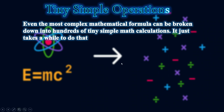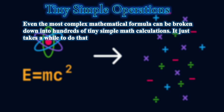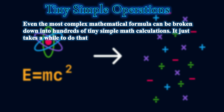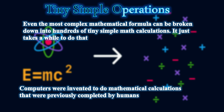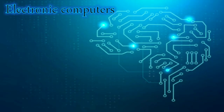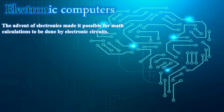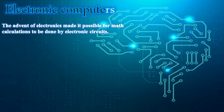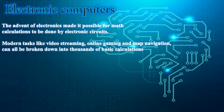Even the most complex mathematical formula can be broken down into hundreds of tiny simple math calculations. Computers were invented to do mathematical calculations that were previously completed by humans. The advent of electronics made it possible for math calculations to be done by electronic circuits. Before electronics, human beings did math calculations; after electronics, the work became much easier.